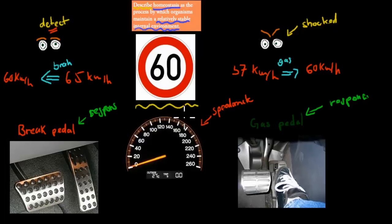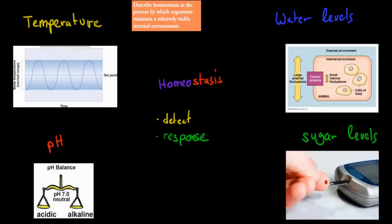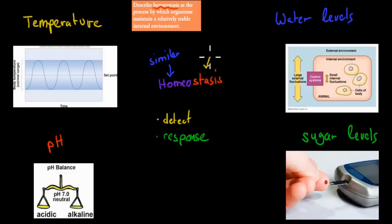The speedometer is the analogy for homeostasis. We want to keep it at a certain speed limit, but we won't be able to do that at all times because it's almost impossible. But if it goes too high or too low, we have ways to bring it back. So what is homeostasis? The word 'homeostasis' actually means: 'homeo' means similar, and 'stasis' means keeping still. So you can imagine homeostasis to be a way we keep our internal environment very stable, very similar.